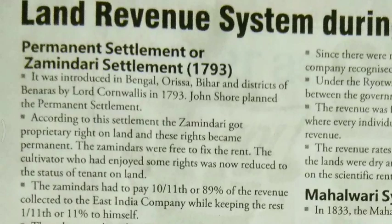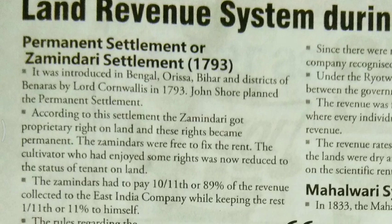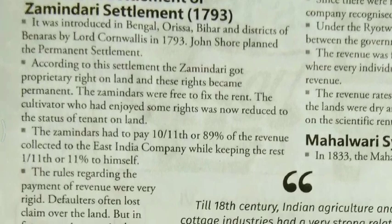The first one is the Permanent Settlement, or Zamindari Settlement, 1793. It was introduced in Bihar and the district of Benaras by Lord Cornwallis in 1793. John Shore planned the Permanent Settlement. According to this settlement, the Zamindars got proprietary rights on land and these rights became permanent.